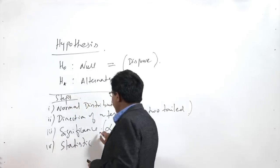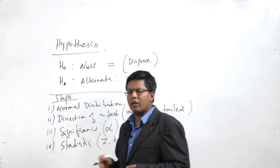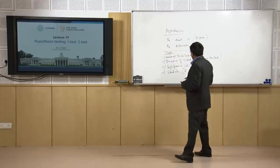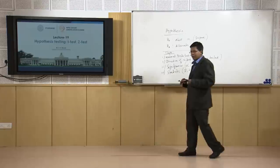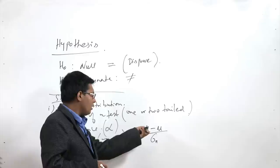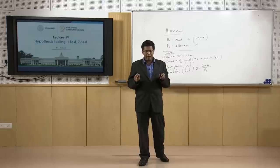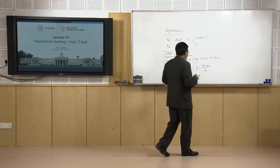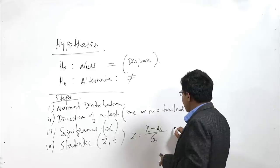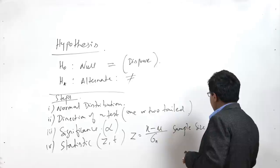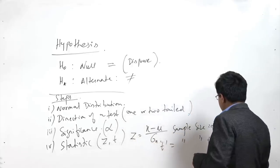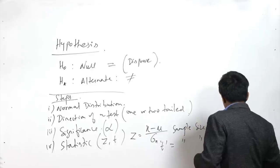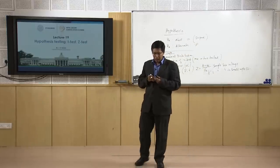The statistic here is either the Z or T statistic. The formula is: Z or T = (X̄ − μ) / standard error. The key difference between Z and T is sample size. A Z-test is used when the sample size is large, while a T-test is used when the sample size is small — up to 30.